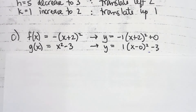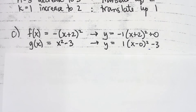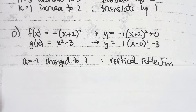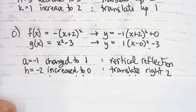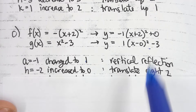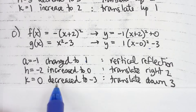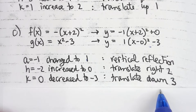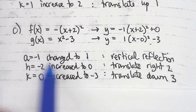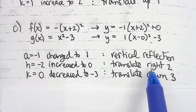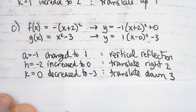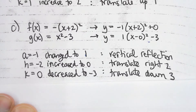The order doesn't matter, but I always do a, then h, then k. My a is going from negative one to positive one — you changed the sign of a, giving a vertical reflection. H went from negative two to zero — increase by two, so translate right two. K went from zero to negative three — decreased by three, so translate down three. The parameter changes are on the left; the transformations are on the right.